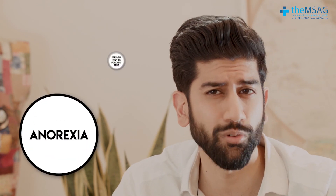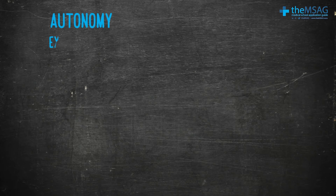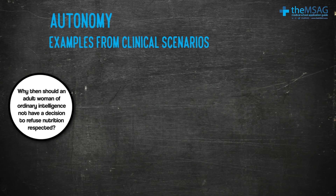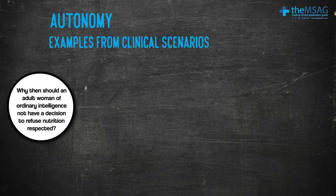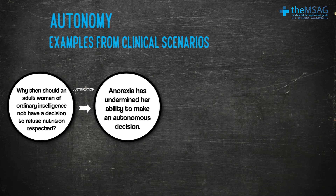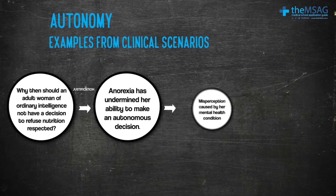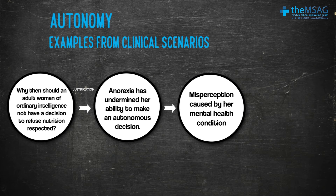So far we have looked at fairly straightforward examples where autonomy is clearly the primary ethical pillar. But what about a patient suffering from anorexia — should they be forcibly fed? A competent adult can refuse medical treatment even if it will result in their death. The justification for overriding this is usually that the anorexia has undermined her ability to make an autonomous decision; the decision to refuse food springs from a misperception caused by her mental health condition.